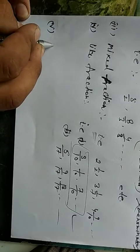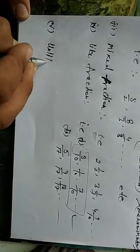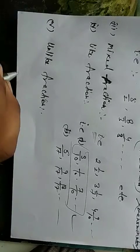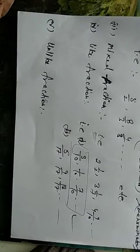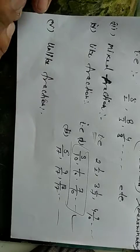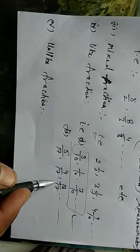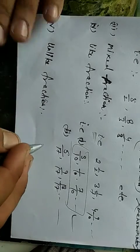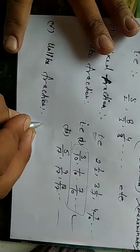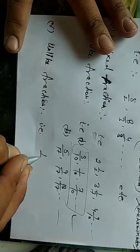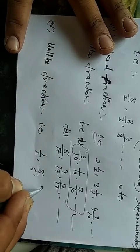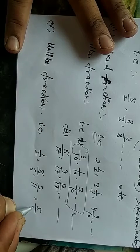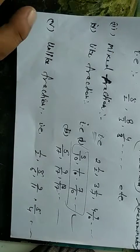Number 5 is unlike fraction. Unlike fractions are those in which the denominators are not equal. For example: 1 by 2, 5 upon 6, 9 upon 11, 5 upon 4 — these are unlike fractions.